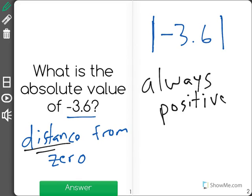So in this case, if we have negative 3.6, let's just create a little number line here and I'll place zero right here. So we have negative 1, negative 2, negative 3, negative 4.